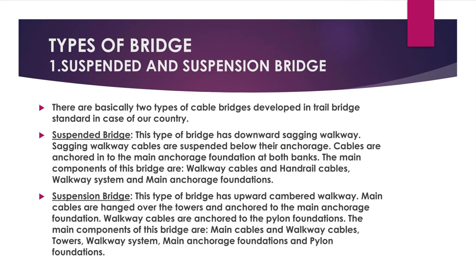Types of Bridges: There are basically two types of cable bridges developed in Trail Bridge Standard in our country, which are suspended and suspension bridges. A suspended bridge has a downward sagging walkway. The sagging walkway cables are suspended below their anchorage. Cables are anchored into the main anchorage foundation at both banks. The main components of this bridge are walkway cables, handrail cables, walkway system, and main anchorage foundations.